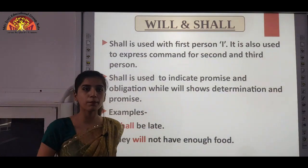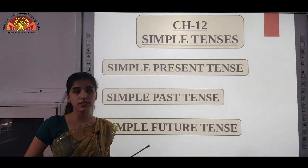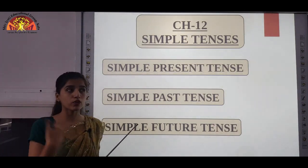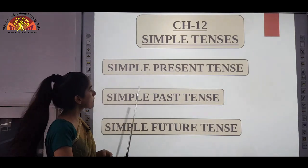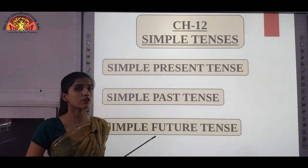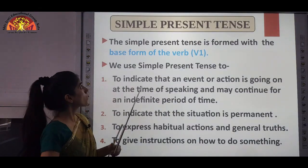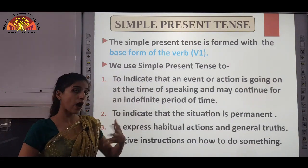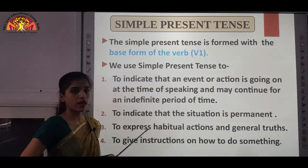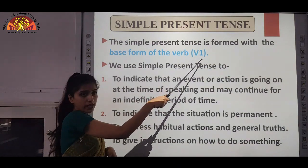Now we are going to start with chapter number 12, that is simple tenses. You can open your books to page number 55. In this chapter we are going to study simple present tense, simple past tense, and simple future tense. First we will study simple present tense. The simple present tense is formed with the base form of the verb — that is V1, the root form.